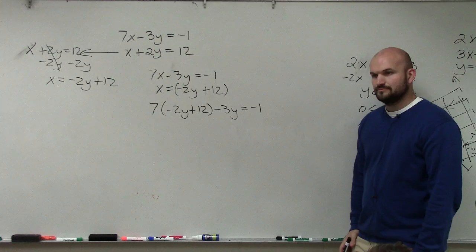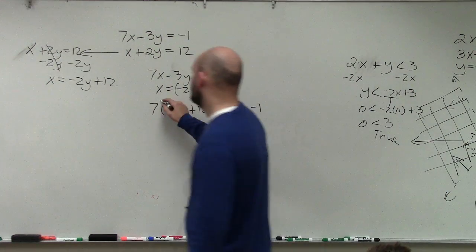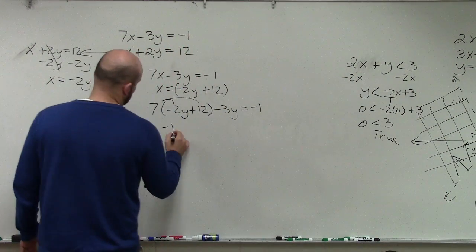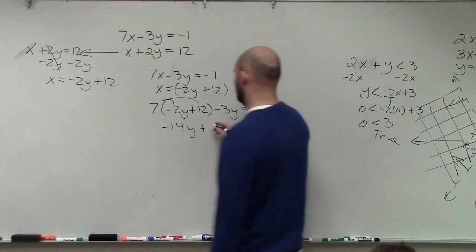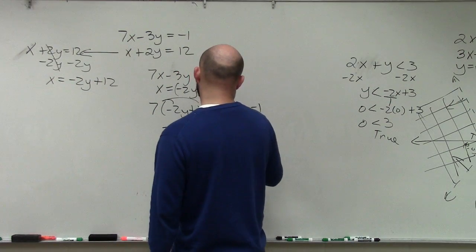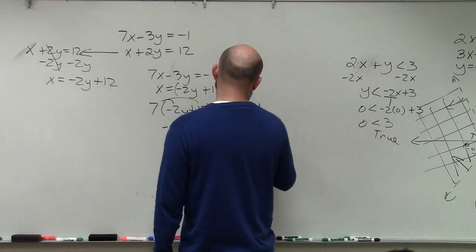Does everybody see what I did? Now we need to apply distributive property plus 7, that's going to be 84, minus 3y equals negative 1.